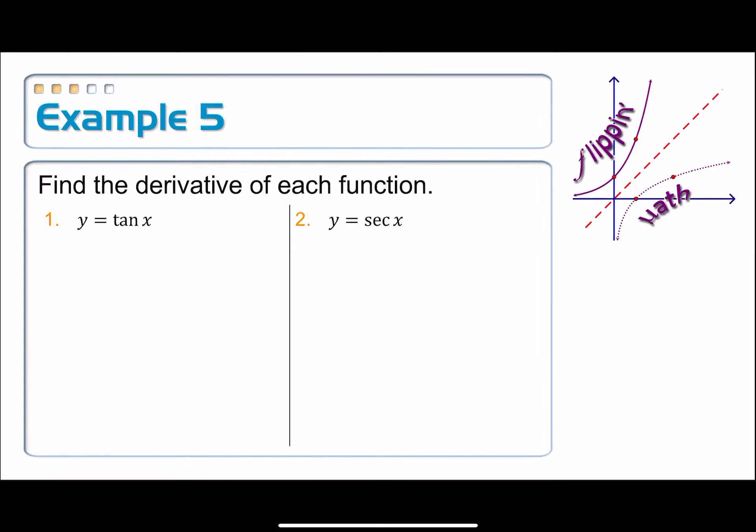For example 5, we're going to find two more derivative rules. We're going to find the one for tangent, separately from secant.